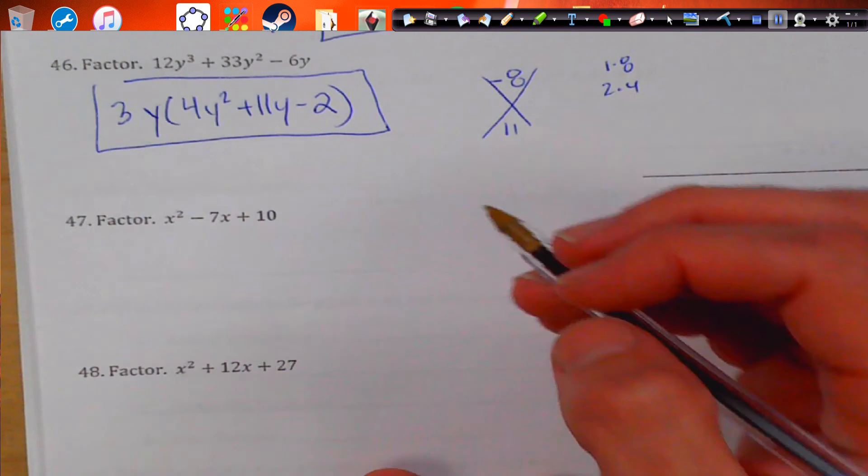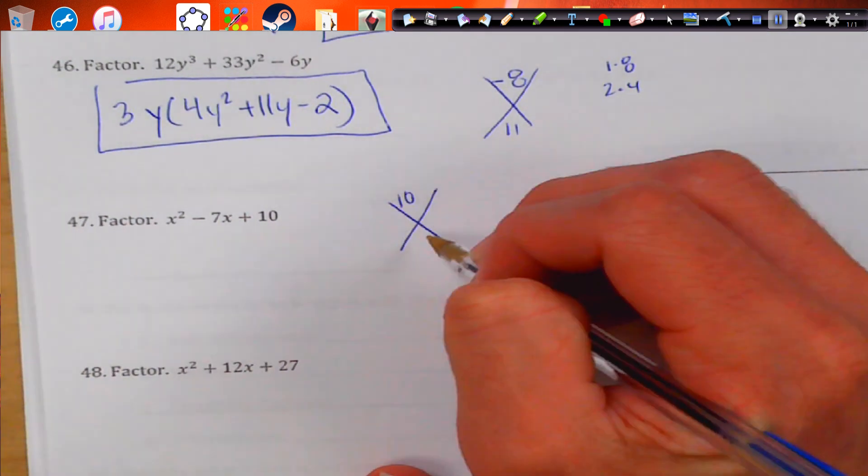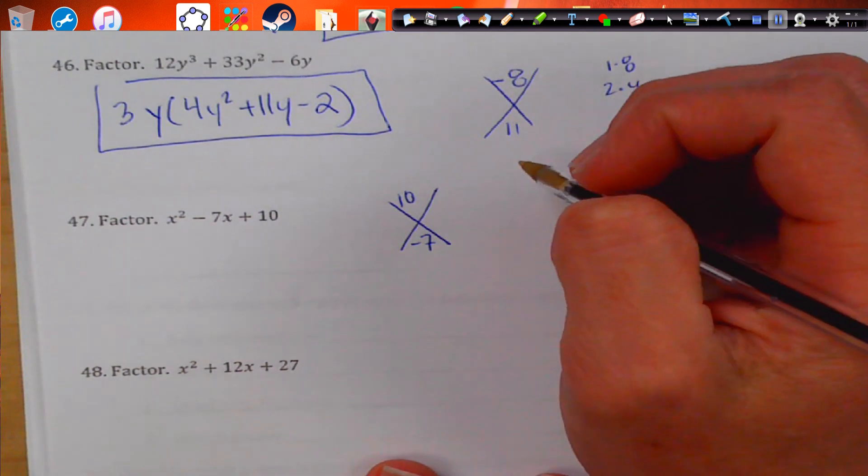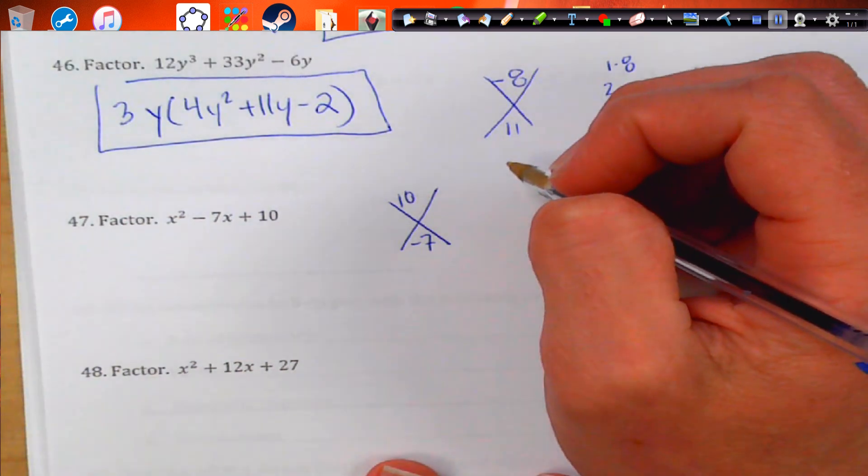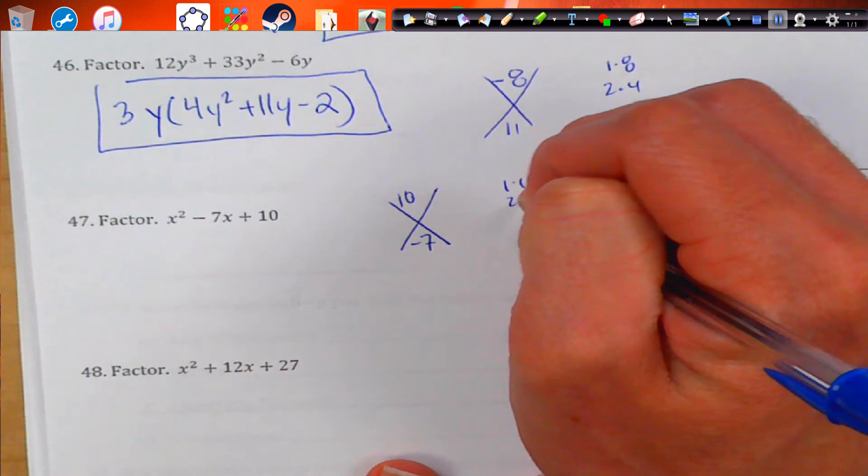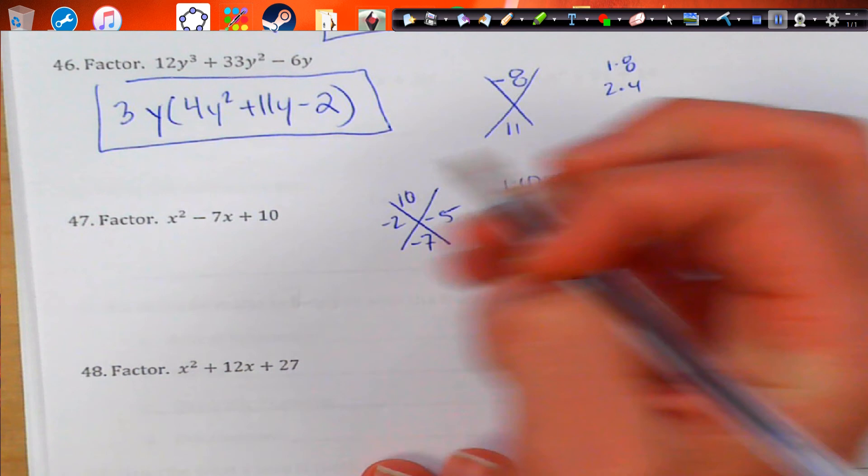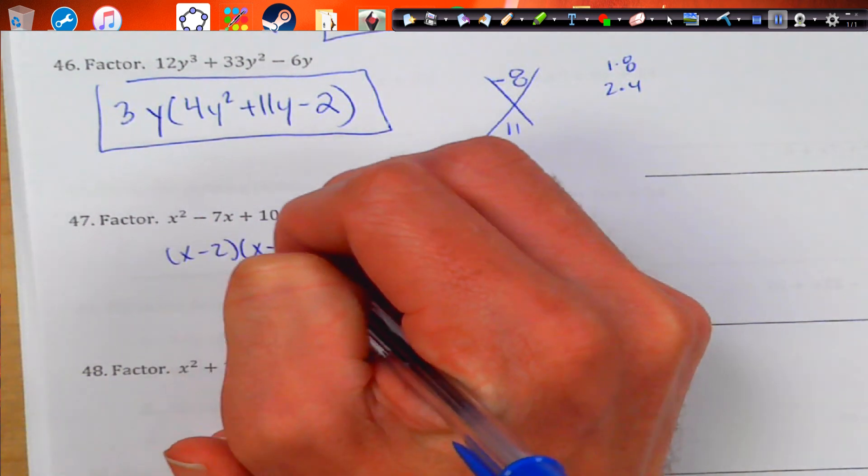Here, we're going to use our X method. We're multiplying to 10, add to negative 7. Let's see here. We got 1 times 10, 2 times 5. So, negative 2 times negative 5 would work. So, we get x minus 2 and x minus 5.